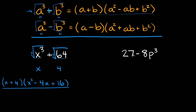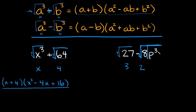Let's try one more. Here we have 27 minus 8p cubed. I can see that I have two perfect cubes, so all I have to do is take the cube root of each of these. The cube root of 27 is equal to 3, and the cube root of 8p cubed — you can take the cube root of 8 and the cube root of p cubed separately. The cube root of 8 is 2, and the cube root of p cubed is just p, so here we have 2p.